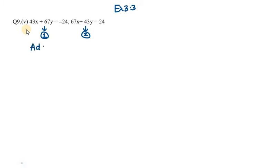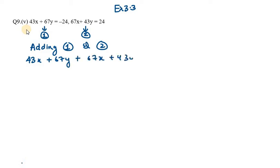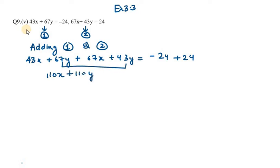The first step is we need to add equation 1 and equation 2. Remember, when you are adding, you need to add the left hand side with the left hand side and the right hand side with the right hand side. So 43x plus 67y plus 67x plus 43y equals minus 24 plus 24. That gives us 110x plus 110y equals 0.